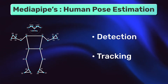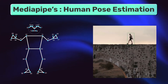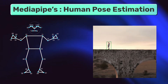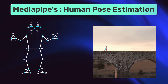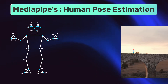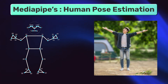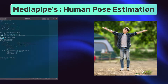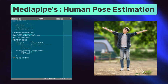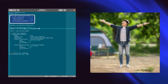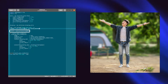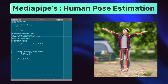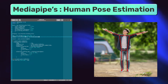The pipeline consists of two-step detection and tracking. Using a detector, the pipeline first locates the person. The tracker then predicts all the pose landmarks. Let's input a sample image and check what the landmarks look like. Using the MediaPipe Pose solution, we create the pose object, then infer over an image using the function process, and get the following output after drawing the landmarks.